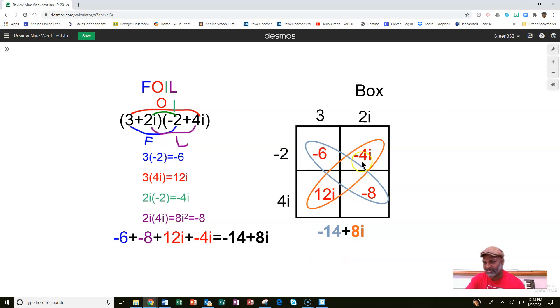Then you combine your like terms that are all on the inside of the box. That means your negative 6 and your negative 8, which are down the diagonals. You just basically add the diagonals. You get a negative 14 when you add those two. And when you add 12i and negative 4i, you get a positive 8i. Again, the same answer. Look at the colors. And that's two ways in which you can multiply complex numbers.